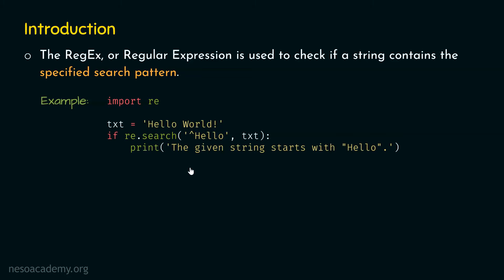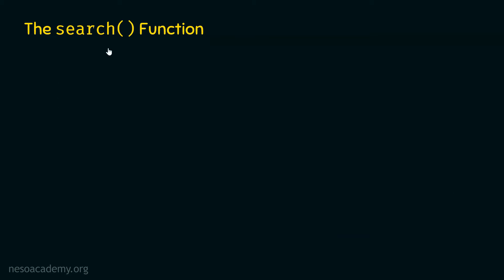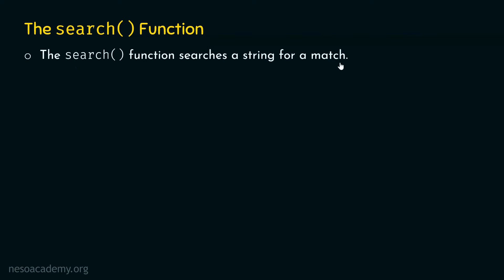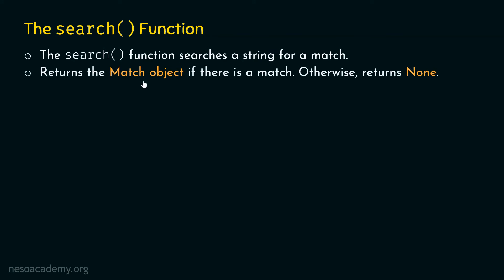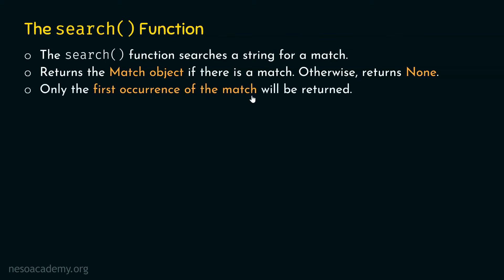Let's move on to the search function in detail. The search function searches a string for a match. If there is a match, it returns the match object; otherwise, it returns None. It is also worth noting that it only returns the first occurrence of the match — it will not return subsequent occurrences. For example, if we want to search for a white space and there are multiple white spaces in the string, it will only return the first occurrence of the white space.